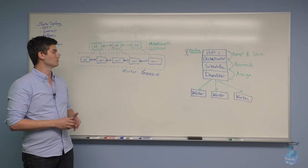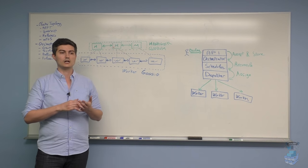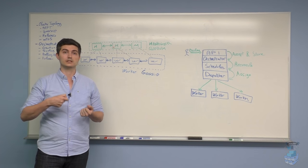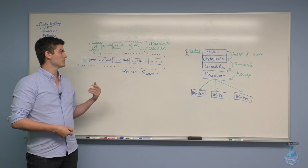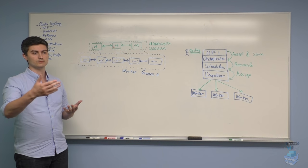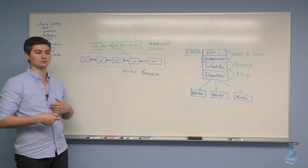There are two kinds of nodes. We have manager nodes, which perform all the scheduling and orchestration. And then we have worker nodes, which are only responsible to take work, execute it, and report back on the status.